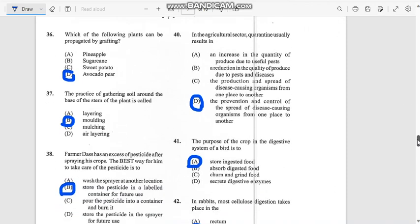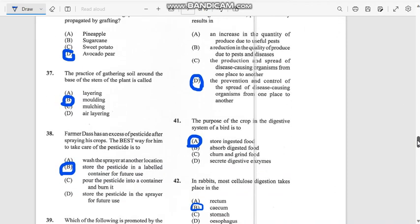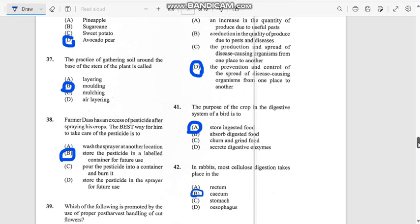Number 37: The practice of gathering soil around the base of a stem of a plant is called molding. It's around the base of the stem of the plant.